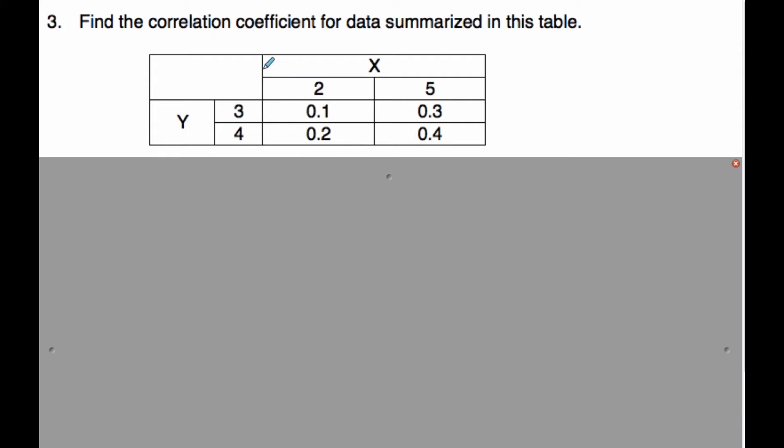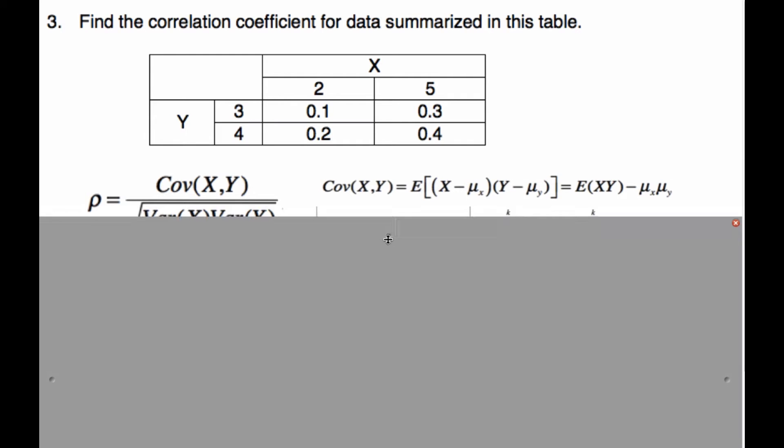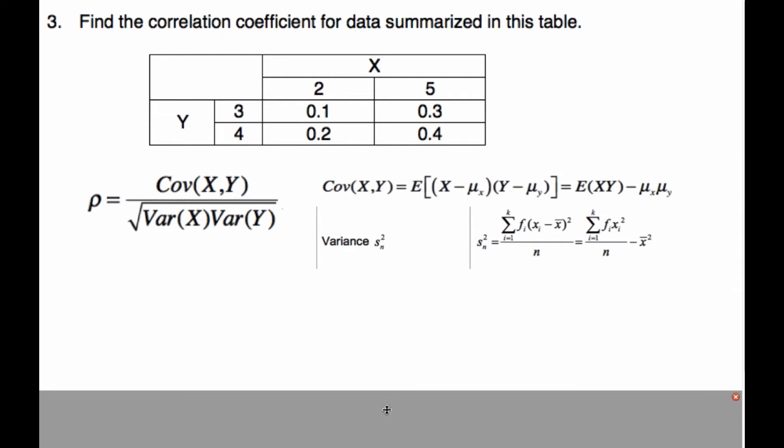We're going to do an example here with the correlation coefficient. Find the correlation for data summarized in this table. Recall that the correlation coefficient ρ equals the covariance over the square root of the variance of X times the variance of Y. This is not in the formula booklet as such; it has a slightly different one, but this is also true, which I've just previously shown you. Recall the covariance is equal to this calculation here.